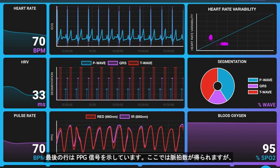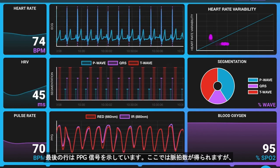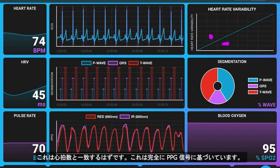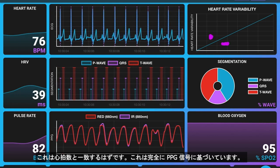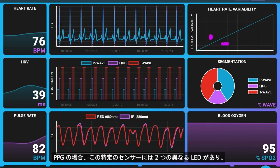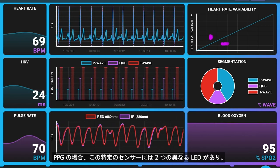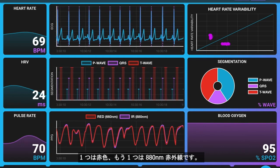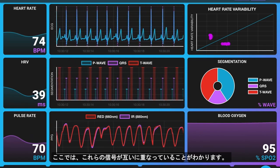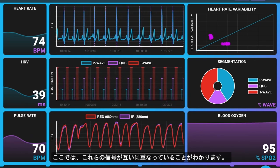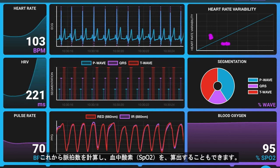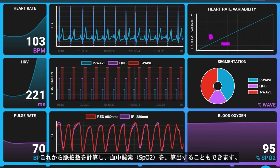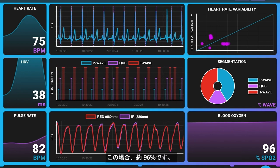The last row is showing you the PPG signal. Here we're getting the pulse rate, which should coincide with the heart rate — this is based purely off of the PPG signal. This particular sensor has two different LEDs: a red one and an infrared at 880 nanometers. We can see that those signals overlap each other. From this, we're calculating the pulse rate, and we're also able to derive the blood oxygen — the SpO2 — around 96.